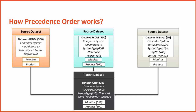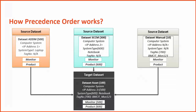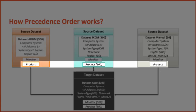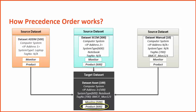Next, consider that the source dataset discovers information about monitor. In this case, the ADDM dataset has the highest precedence. Hence, monitor information from the ADDM dataset is populated into the target dataset. Similarly, all source datasets discover product information, for which the SCCM dataset has the highest precedence. Thus, product information from the SCCM dataset is populated into the target dataset.